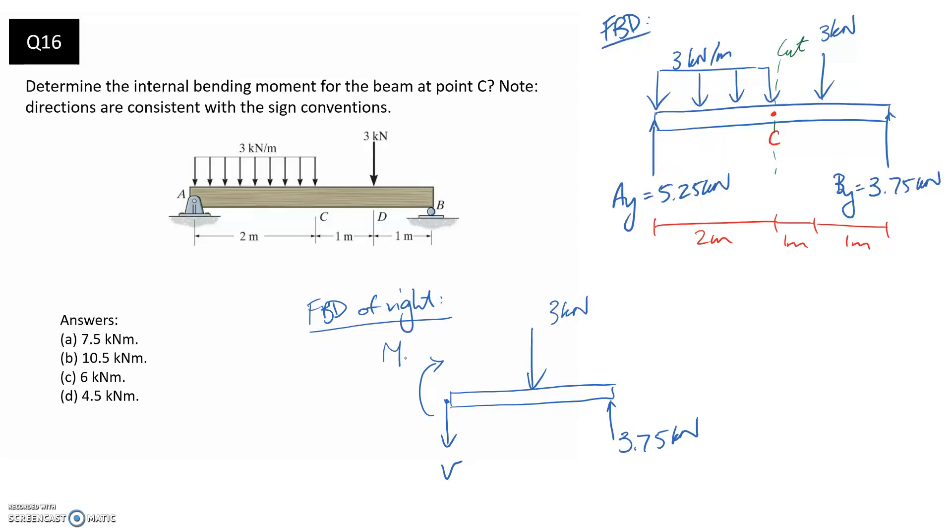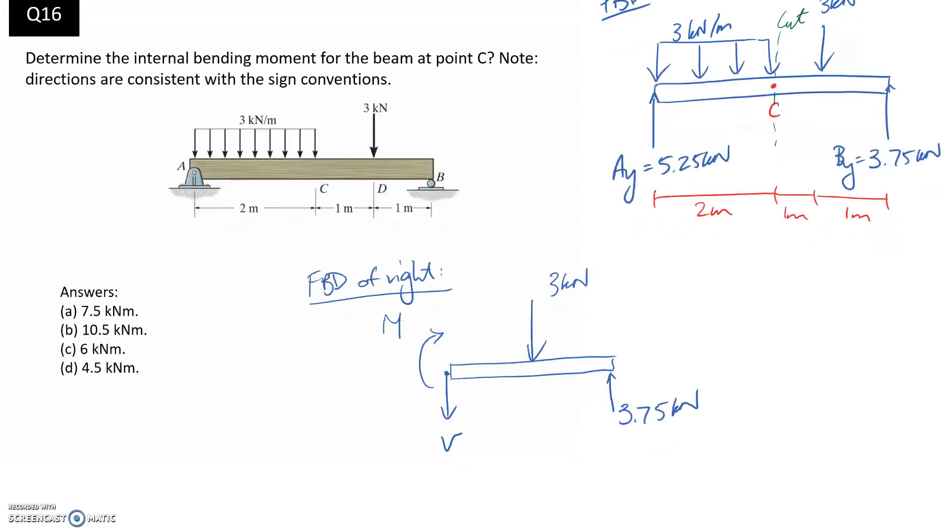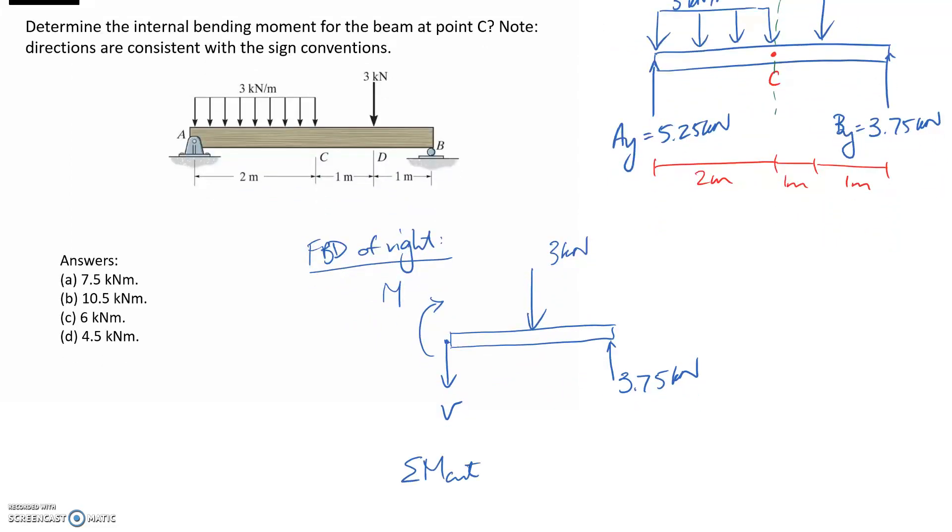All I'm really interested in is the moment, so I'm going to sum moments at the cut point to be equal to zero, about this point here, in order to determine M, which is my internal moment. I'll just quickly transfer across - we know these distances, so it's one meter and one meter in between them.